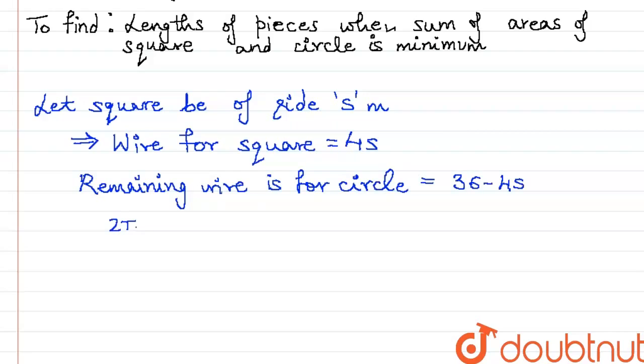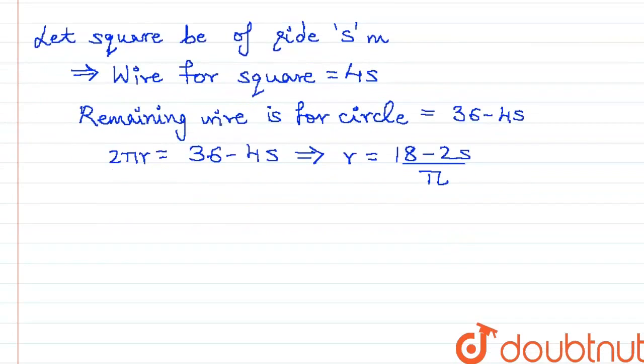That will be the perimeter of the circle which is 2πr. Meaning that the radius of the circle r will be 36 minus 4s by 2π, which is 18 minus 2s by π. Let us take a look at their areas now.